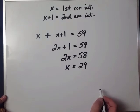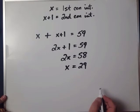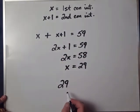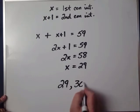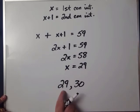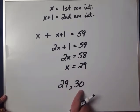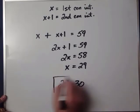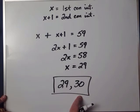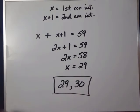Answer the question: if the first consecutive integer is 29, the next is 30. No labels needed — it's clear which is first and second. No units — apartment numbers are just numbers. Quick check: the sum of 29 and 30 should be 59, and it is. That checks.